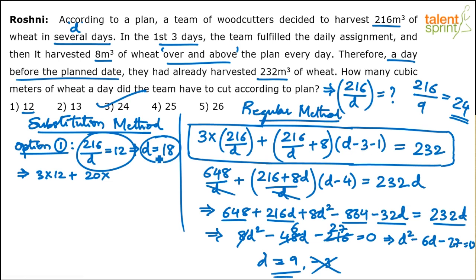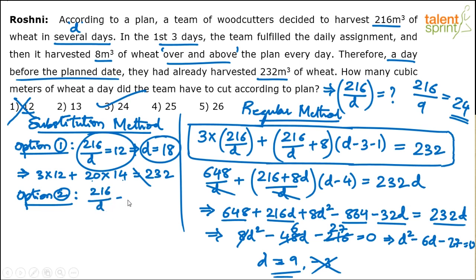For option 2: 216/d = 13 gives d = 216/13, which is a non-integer value. Since the number of days must be an integer, option 2 is eliminated. Similarly, options 4 and 5 — 216/25 and 216/26 — also give non-integer values for d, so they are eliminated directly.